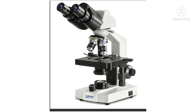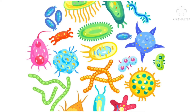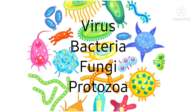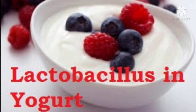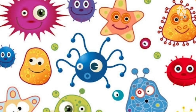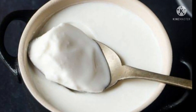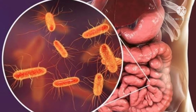Microbes are very small living things that cannot be seen with the naked eye. They can be seen only with the help of an instrument called a microscope. Microbes are of four main types: bacteria, fungi, and protozoa. Microbes can be useful or harmful to human beings.